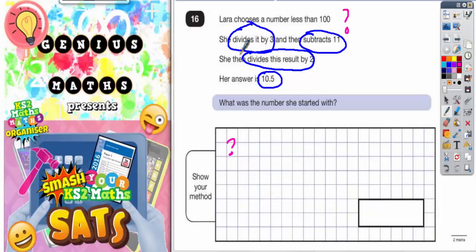I'm going to draw some arrows to describe what she's doing to the number. From the question mark, she is dividing by 3, then subtracting 11, and then on the third step, she's dividing this result by 2. Her answer is 10.5.